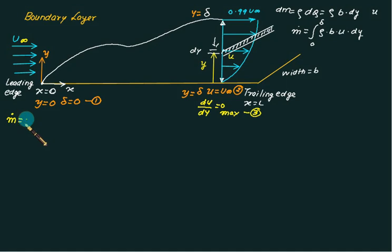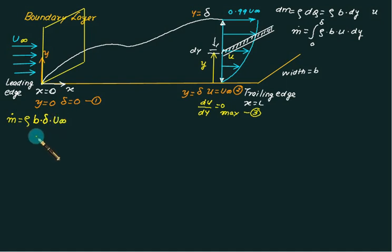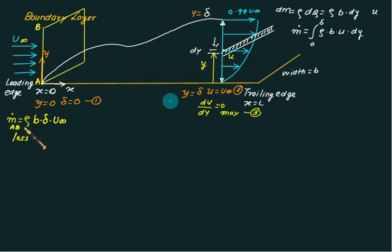The mass flow rate at the inlet — that is, when the plate is not present — for the same value of delta, is rho multiplied by b multiplied by delta multiplied by u-infinity, since the velocity is constant throughout the section. Because of the insertion of the plate there is a loss in mass. Consider sections AB and CD: the mass flow rate through AB is more than through CD, which is called the loss in mass.